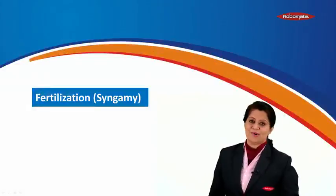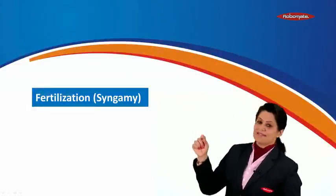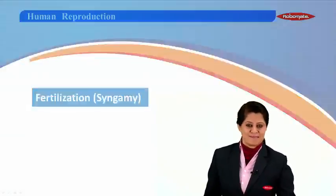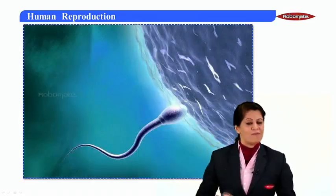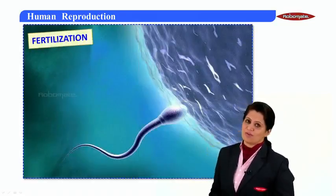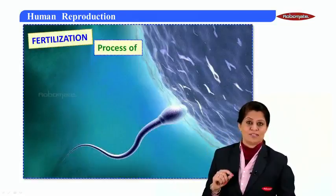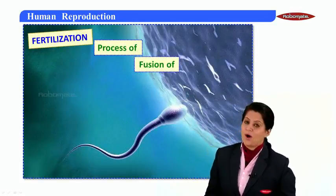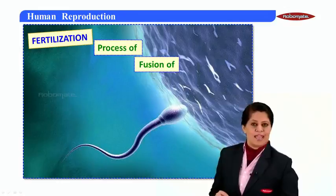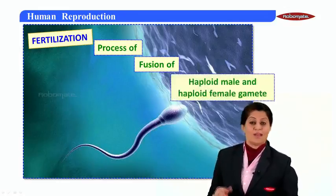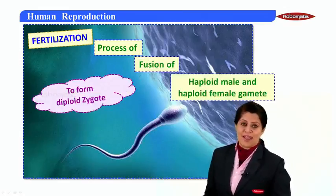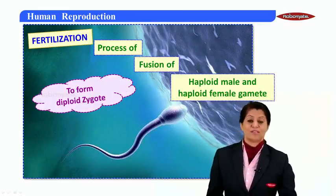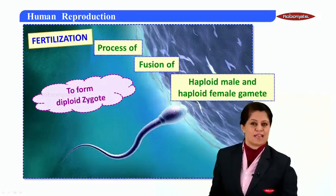Hello students. In this module we are learning an important process called fertilization or syngamy. When we define fertilization, it is the process of fusion of haploid male and female gametes to form a diploid zygote with 2n chromosomes. So this is what the definition of fertilization is.